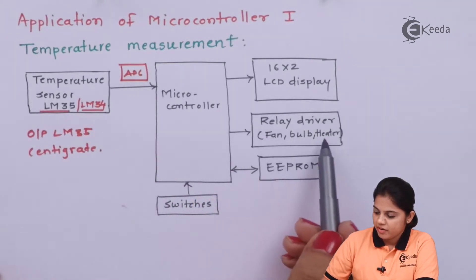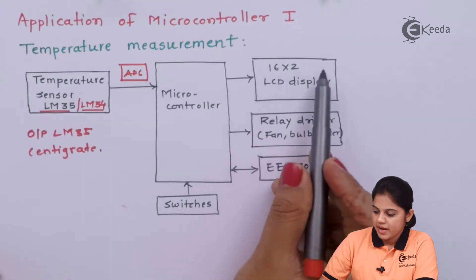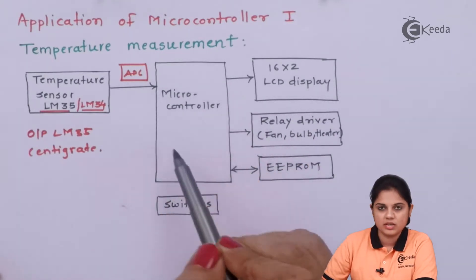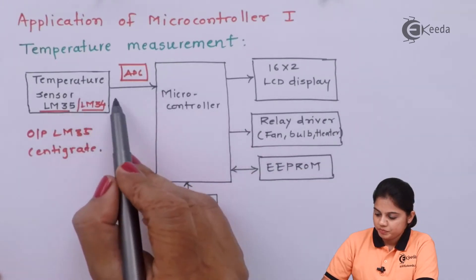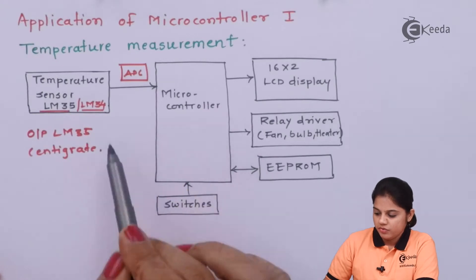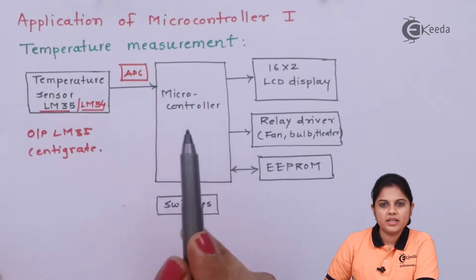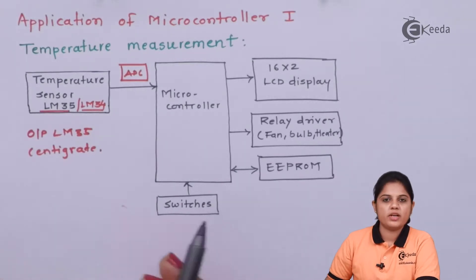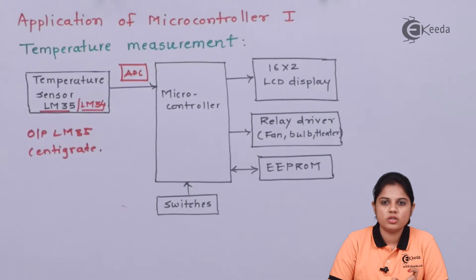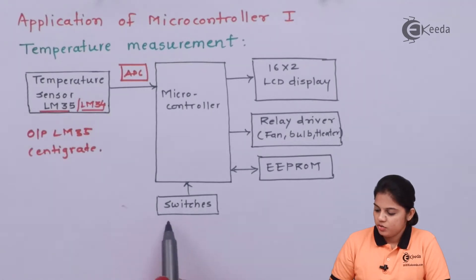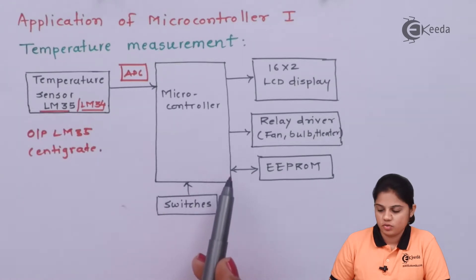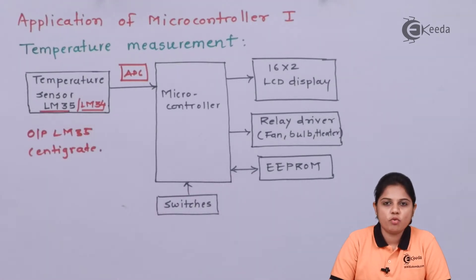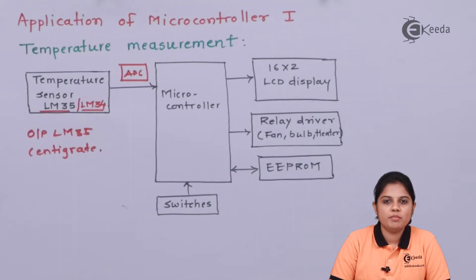The microcontroller is connected with EEPROM, a relay driver, and a 16x2 LCD display where the actual value can be displayed. After processing the sensed temperature data within the microcontroller, the output can be shown on the LCD display. Switches are also provided so that the microcontroller can be switched on and off according to the application requirement. EEPROM is an erasable ROM memory, meaning the program can be written to the microcontroller, erased, updated, or changed according to changes in the application.